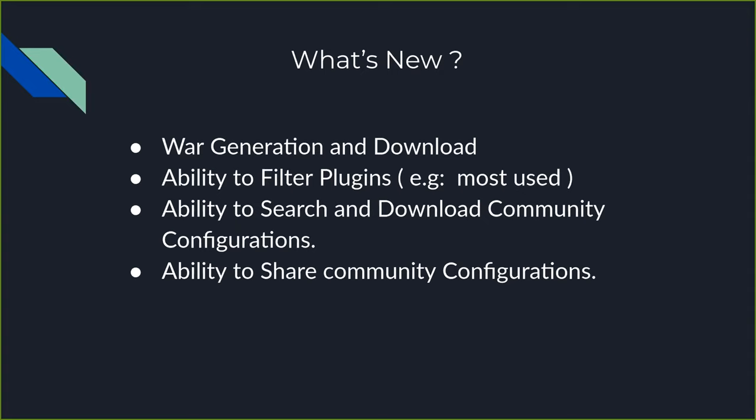Let's talk about what was added in phase two. The major things were war generation — last time you could generate the war but not download it, so we've added that ability. You can now download your war fully with your customization, all your plugins, and if you want to build off a base Docker image. You can now filter plugins — if they're part of the most used or most trending plugins — just like the plugin site. We've also added the ability to search and download community configurations, making it easy to sift through community-generated configurations, download them, modify them, and even re-upload them.